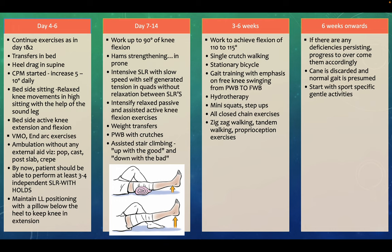Three to six weeks: increase range of motion to 110–115 degrees. The patient can begin single crutch walking, stationary bicycle, gait training with emphasis on free knee swinging, and progress from partial to full weight bearing. Hydrotherapy is introduced to develop strength and relaxation. Mini squats, step-ups, all closed-chain exercises, zigzag walking, tandem walking, and proprioception exercises can be started.